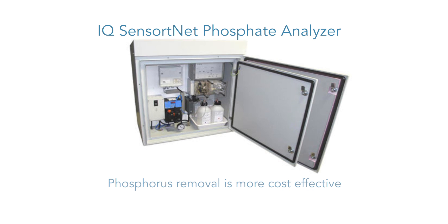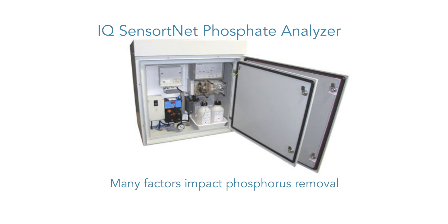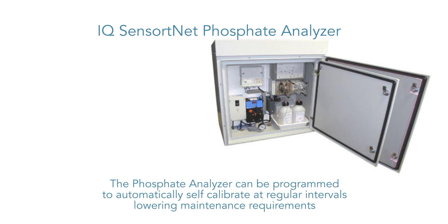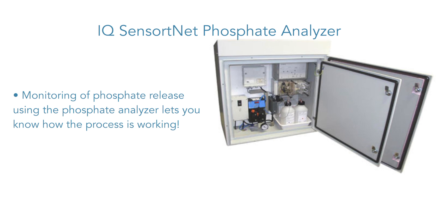Enhanced biological phosphorus removal is more cost-effective for meeting limits less than 0.5 milligrams per liter. Cycling between anaerobic and anoxic zones creates conditions for bacteria to release and then take up excess phosphate. The amount taken up is more than the amount released because bacteria store extra phosphorus. When those bacteria are removed from the system through routine wasting, phosphorus is also removed. Monitoring of phosphate release using the phosphate analyzer lets you know how the process is working.